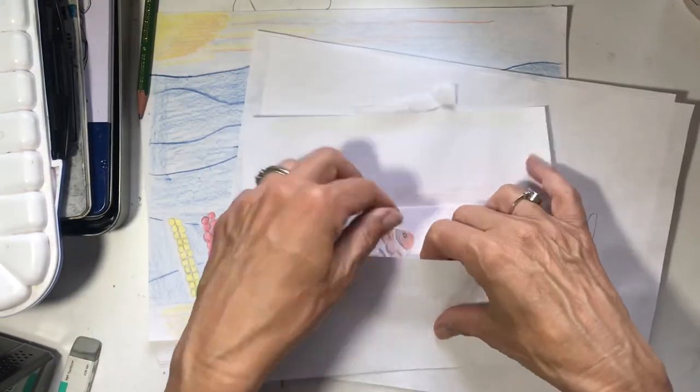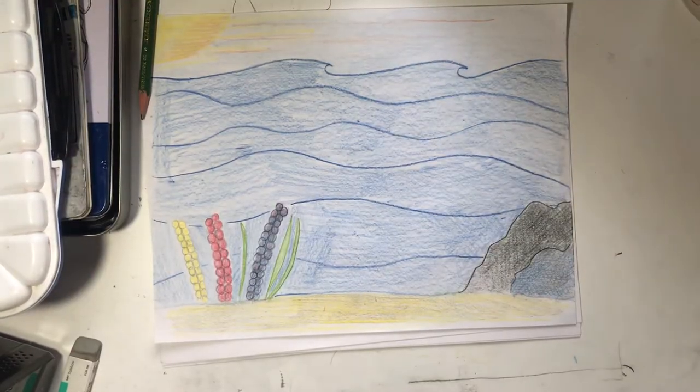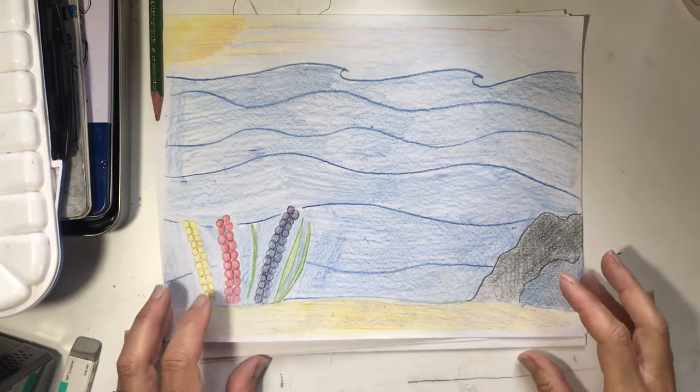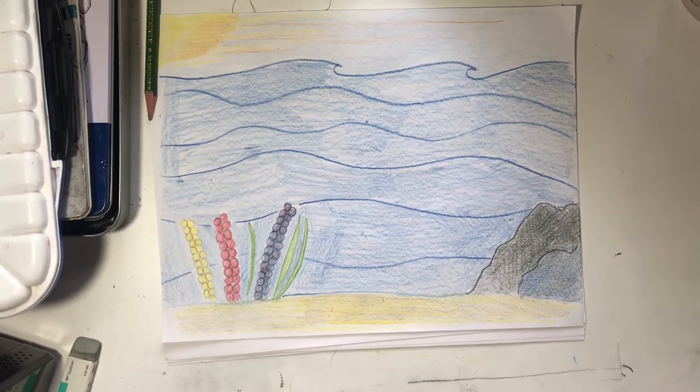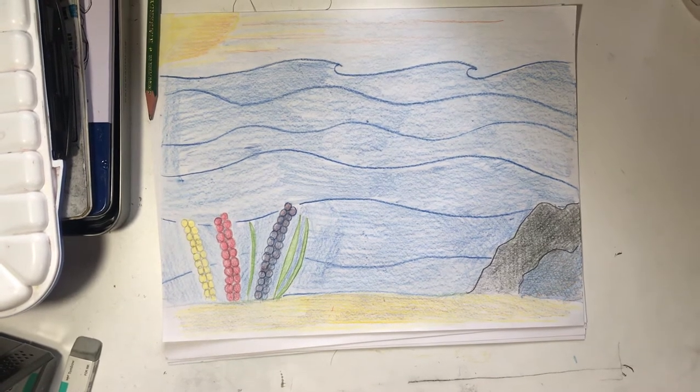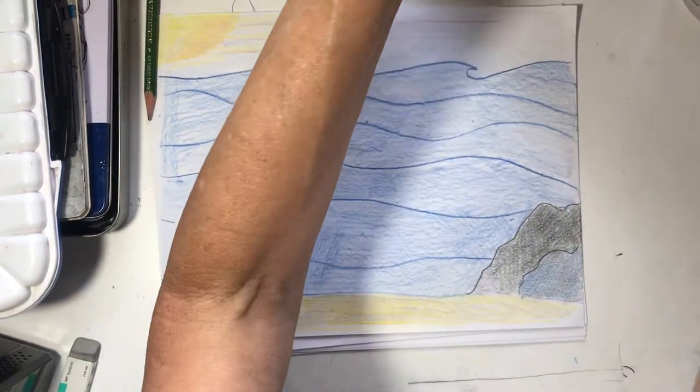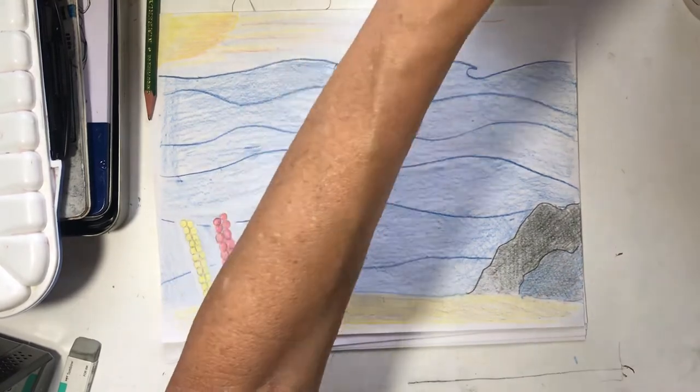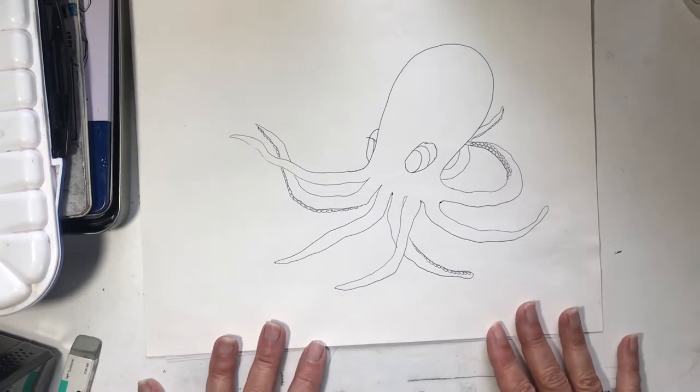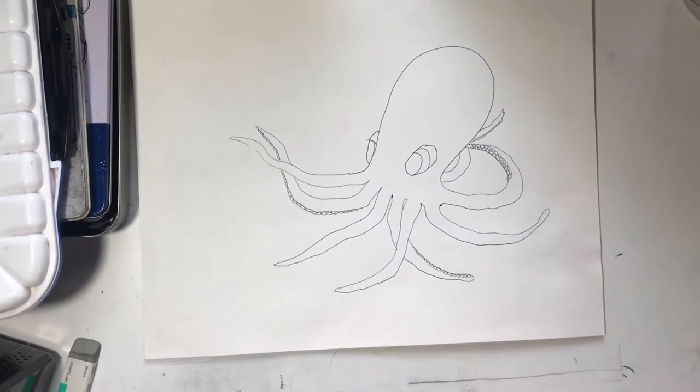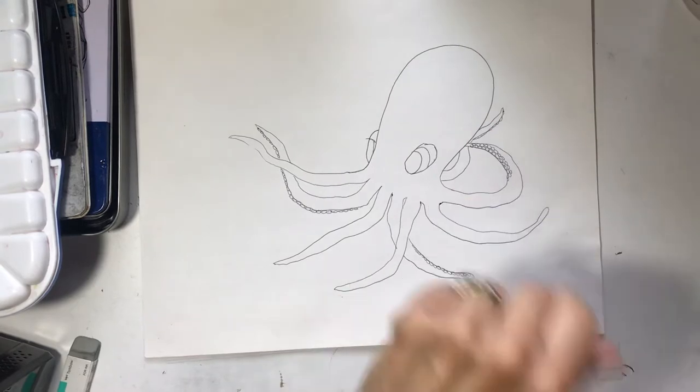Today we're going to do an octopus. An octopus is in the mollusk family. They have eight legs, they have a very large brain, and each leg has like a mini brain that takes care of it. If we were to draw an octopus, we don't have to draw all eight legs because some of them you wouldn't see.